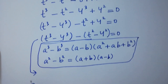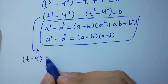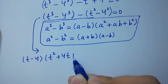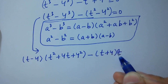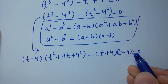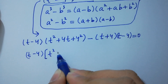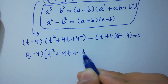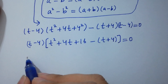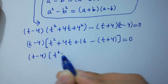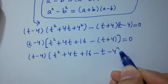Applying these identities: t³ - 4³ gives (t - 4)(t² + 4t + 16), and t² - 4² gives (t + 4)(t - 4). So the expression becomes (t - 4)(t² + 4t + 16) - (t + 4)(t - 4) = 0, and (t - 4) can be taken as common.